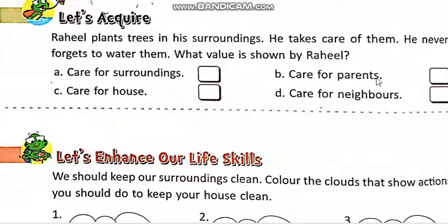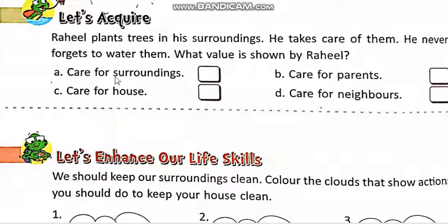B: care for parents — ya phir woh apni walidain ka khiyal rakhta hai. Care for house — ya apni ghar ka khiyal rakhta hai. Care for neighbors — ya phir apni hamsaayun ka khiyal rakhta hai. Students, jab woh trees laga raha hai aur apni surroundings ko clean aur green rakhta hai, so option A is correct — care for surroundings. Hum option A pe tick lagayein ge.